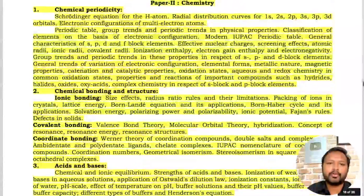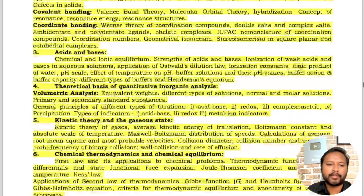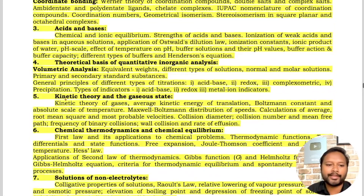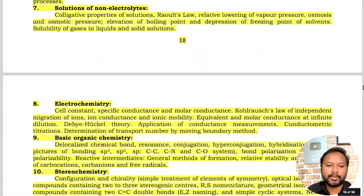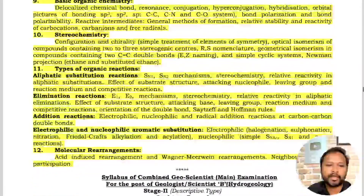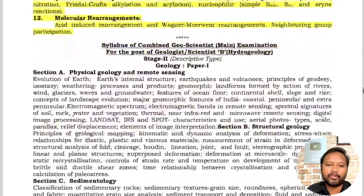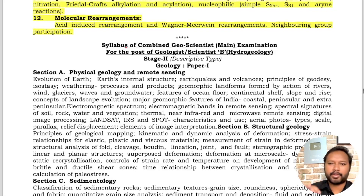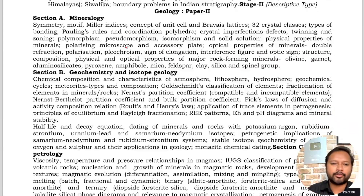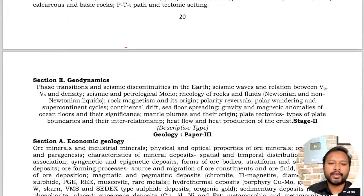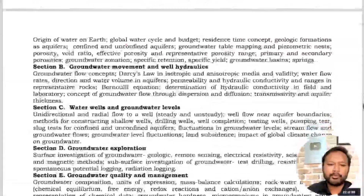Paper 2 for the pre-exam is Chemistry and includes topics such as chemical periodicity, chemical bonding, acid-base theory, quantitative inorganic analysis, kinetic theory and gas laws, chemical thermodynamics, solutions of non-electrolytes, electrochemistry, basic organic chemistry, stereochemistry, types of organic reactions, and molecular rearrangements. If you are preparing for CSIR-NET or GATE, the syllabus remains essentially the same — just the difficulty level will be a little easier.